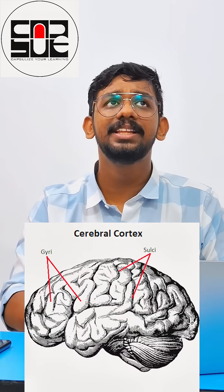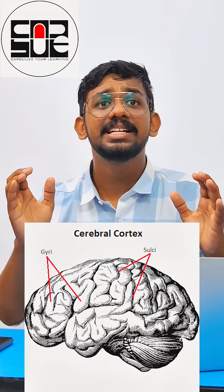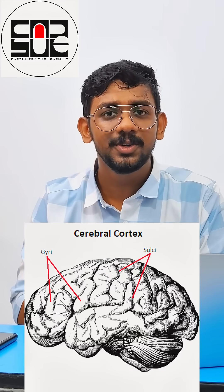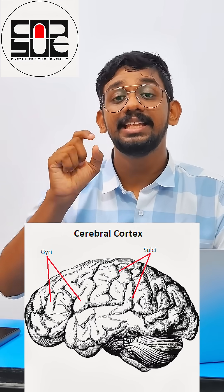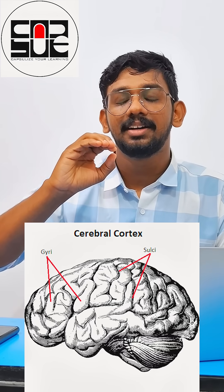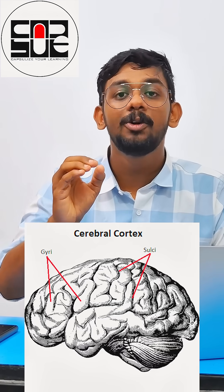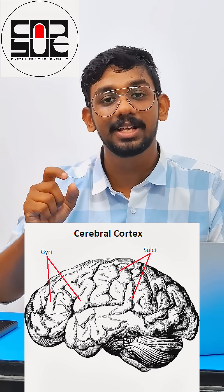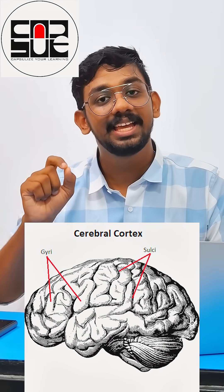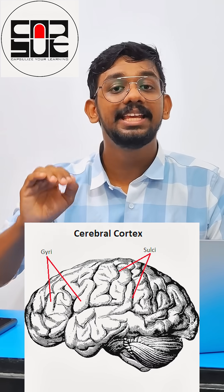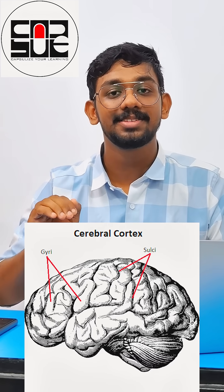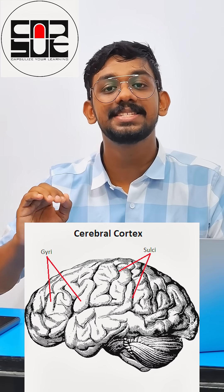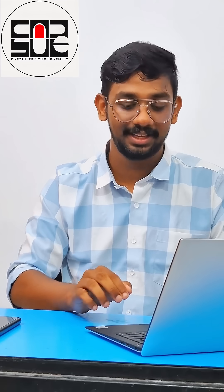We can also deal with the sulci and gyri. What are those? These are the foldings of the brain. The foldings present in the cerebral cortex are known as gyri, and the grooves are known as sulci. These are important for increasing the surface area of the brain.